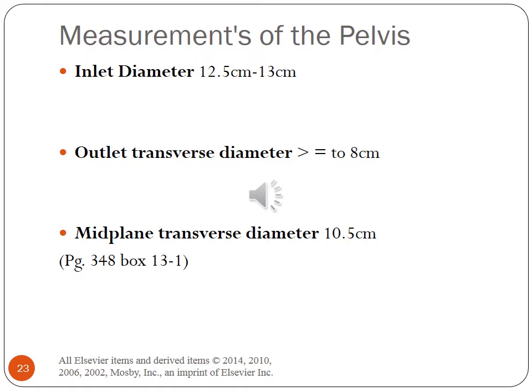Measurements of the pelvis: the inlet diameter is 12.5 to 13 cm; the outlet transverse is greater than or equal to 8 cm; and the midplane transverse diameter is 10.5 cm. The inlet determines whether the presenting part of the fetus can engage or enter. The outlet presents the smallest plane of the pelvic canal. The midplane of the pelvis is normally its largest plane and the one of greatest diameter.